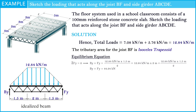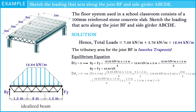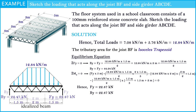From the equation of equilibrium, we assign the upward arrow and anti-clockwise as positive. The result of the vertical reaction Fy is 22.47 kN. Look at the steps carefully, and if you have a question on this point, comment below and we will solve it for you.